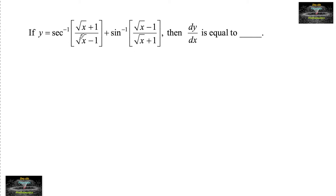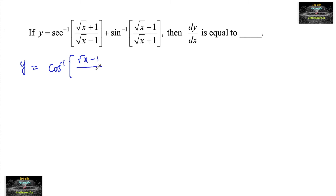If y is equal to secant inverse of √(x+1)/√(x-1) plus sin inverse of √(x-1)/√(x+1), then dy/dx is equal to? We can write y as cos inverse of √(x-1)/√(x+1) plus sin inverse of √(x-1)/√(x+1), since sec⁻¹ can be rewritten as cos⁻¹.